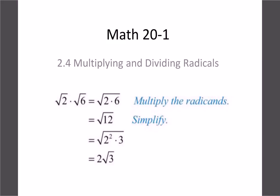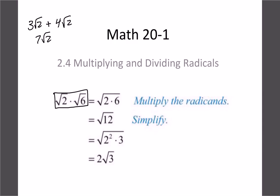Today's lesson we're going to look at multiplying and dividing radicals. We looked at adding and subtracting — remember with those they have to have the same radical number, so 3 root 2 plus 4 root 2 equals 7 root 2. With multiplying and dividing the rules are a little different. For example, root 2 times root 6 equals root 12, which simplifies down to 2 root 3.